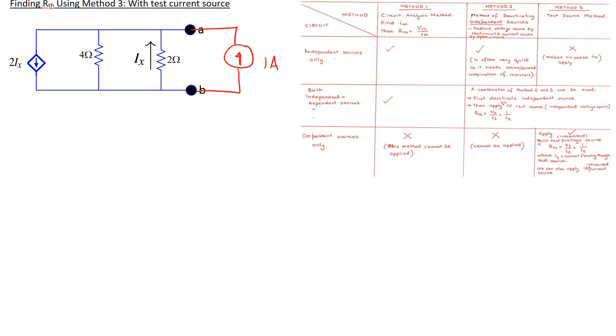We can use either a test voltage source or a test current source. Suppose we apply a test current source having magnitude 1 amp. Now our task is to find the voltage Vt — the test voltage across the terminals. This sub-problem of finding the test voltage can be accomplished using any circuit analysis technique.